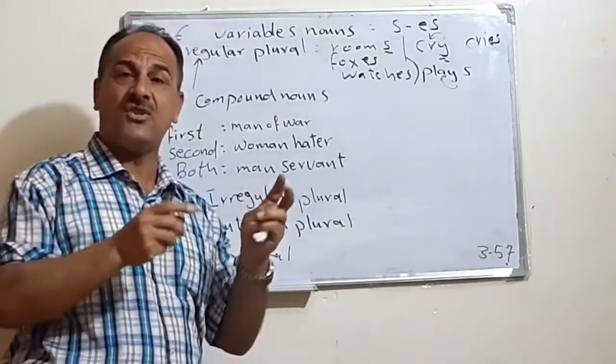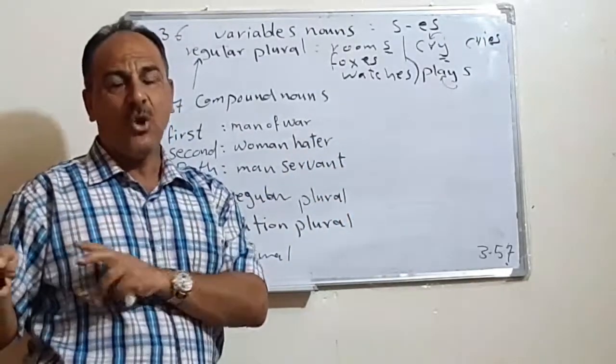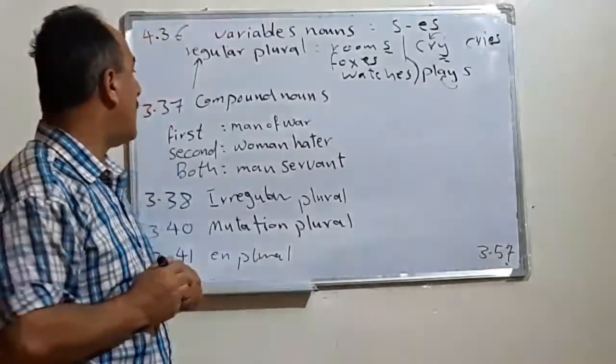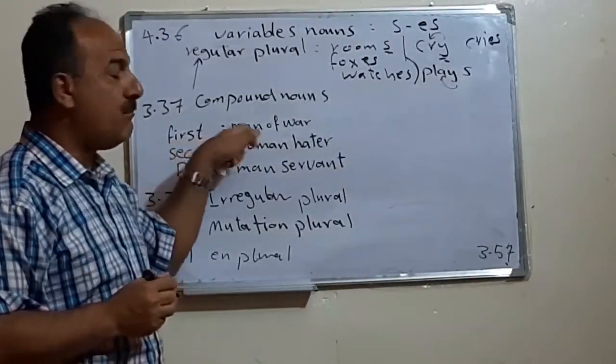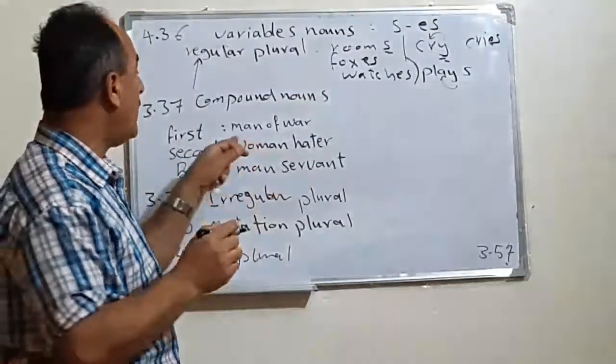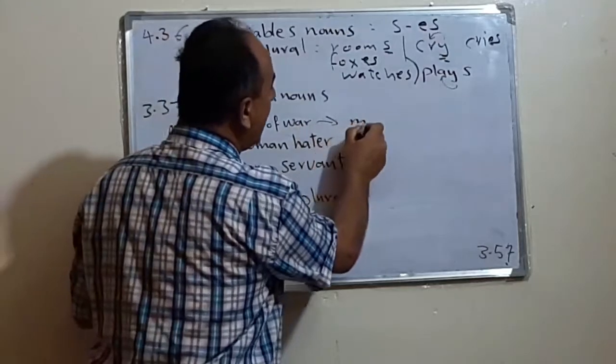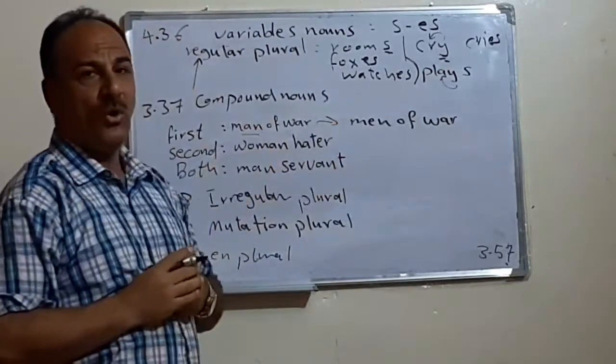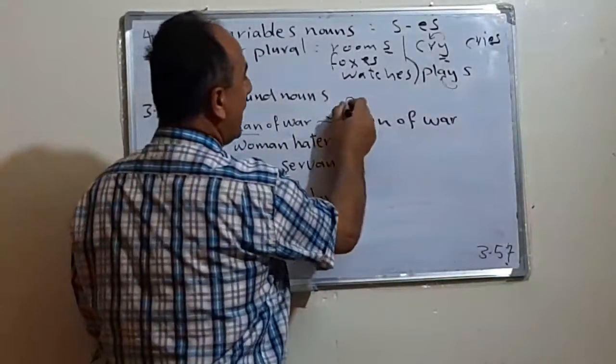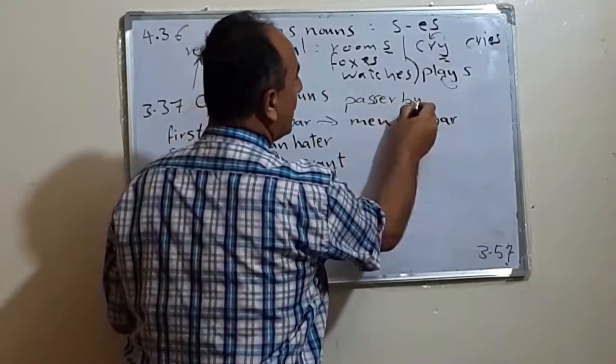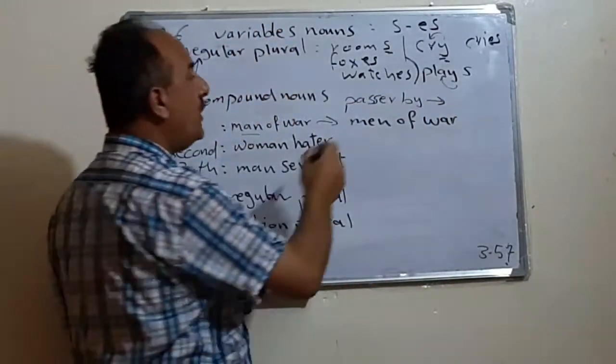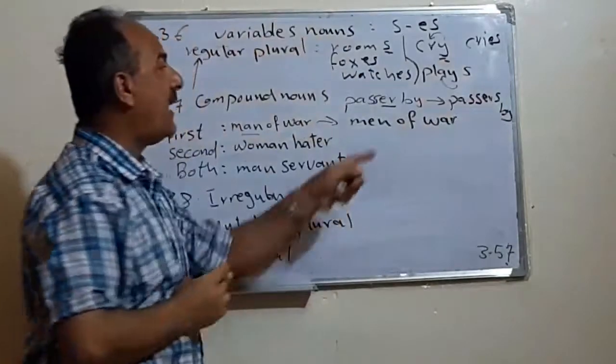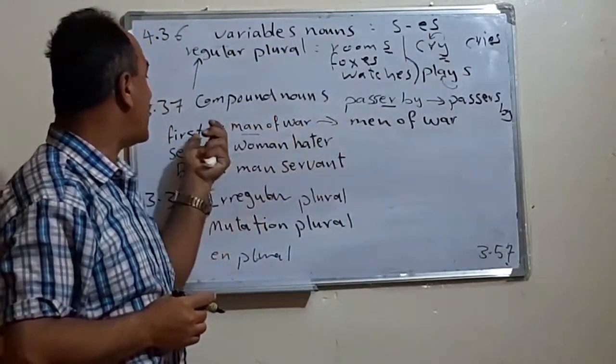In fact, here we have three categories. Either we change the first element and we keep the second, or we change the last item, or we change both of them. For example, the first, we have man of war. Man of war means the soldier. In this case we change this one and we say men of war.